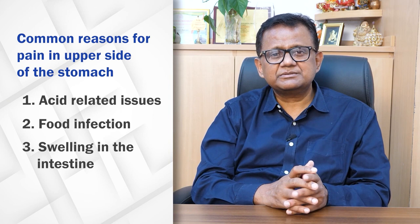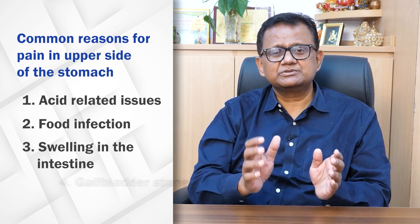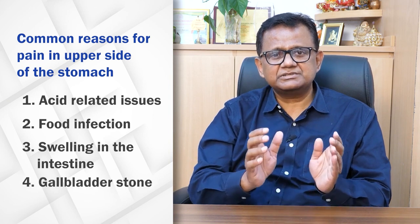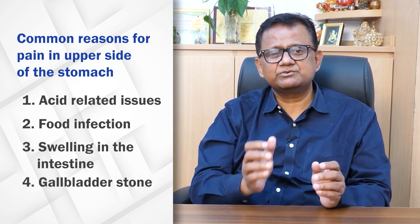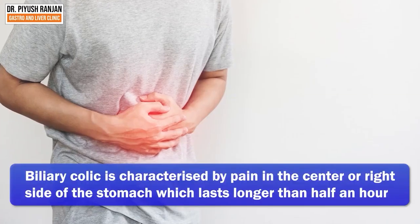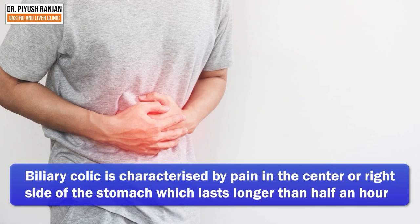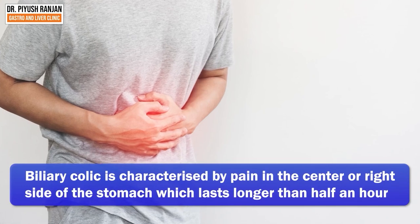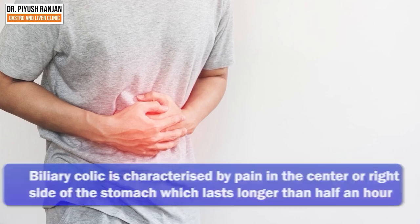The most common significant cause, without these other things, is gallbladder stones. If there is pain in the upper abdomen or the right side, lasting more than half an hour, we call it biliary colic. This is a very common cause of abdominal pain.